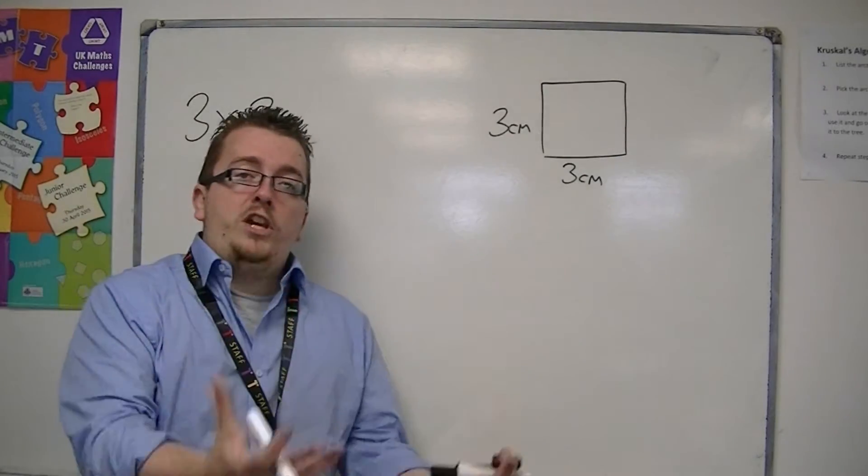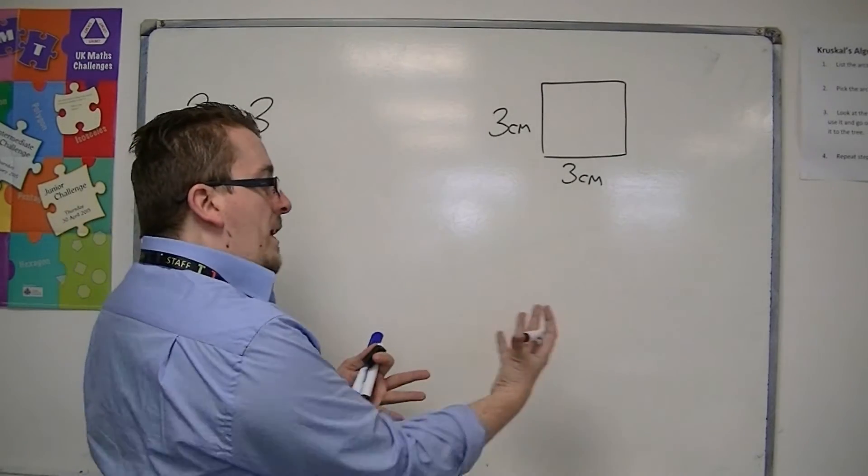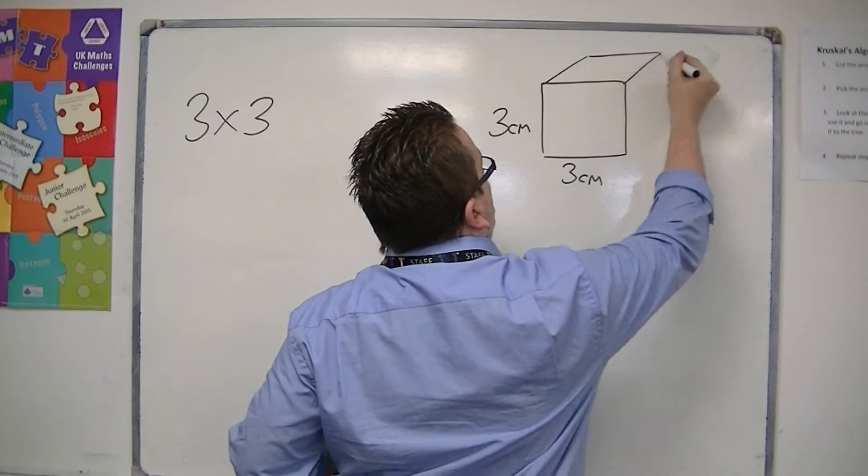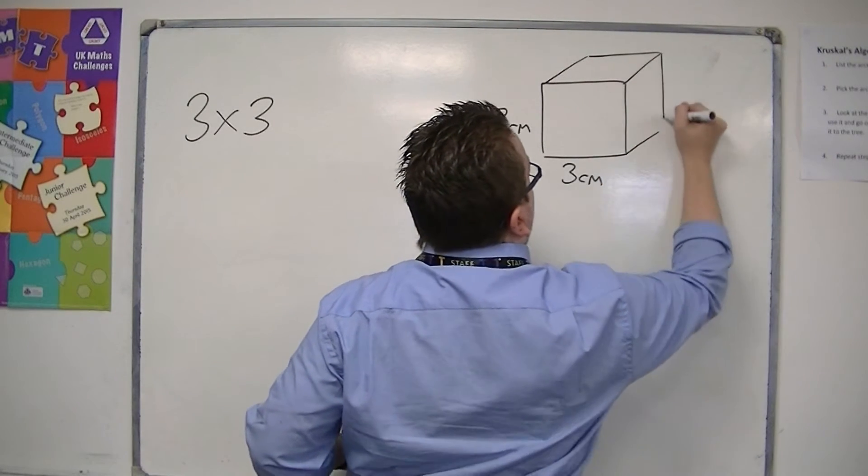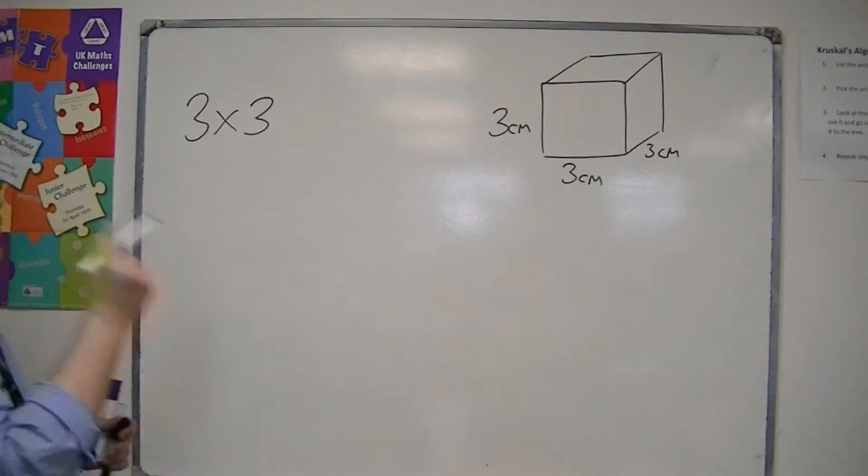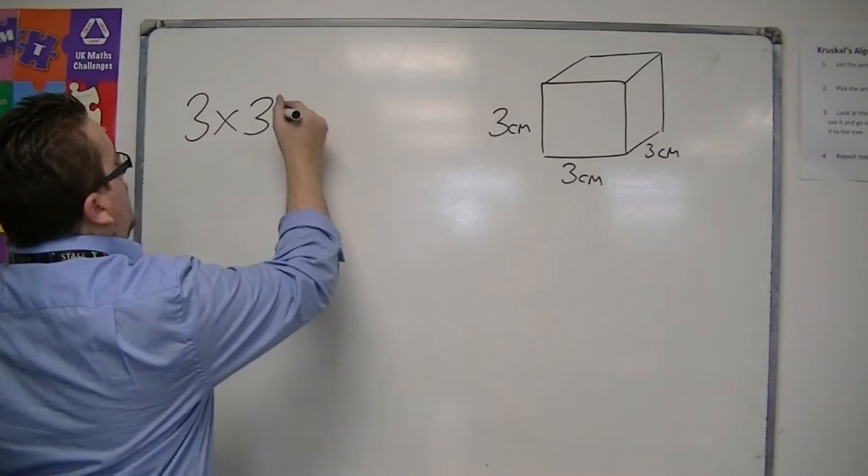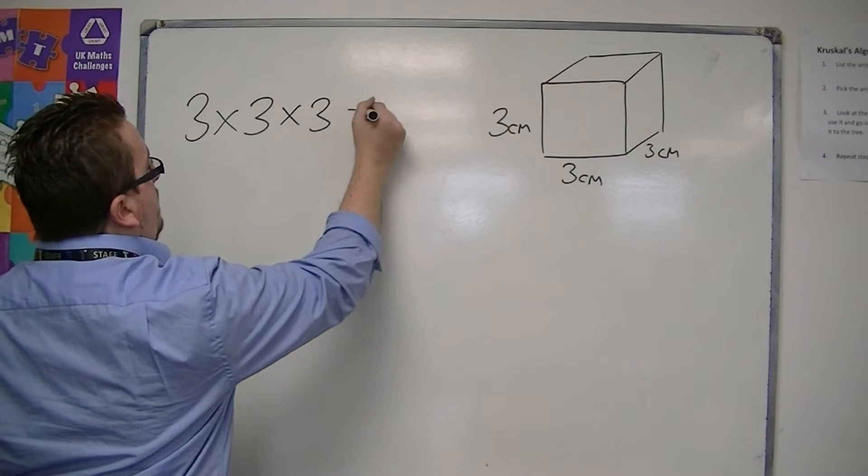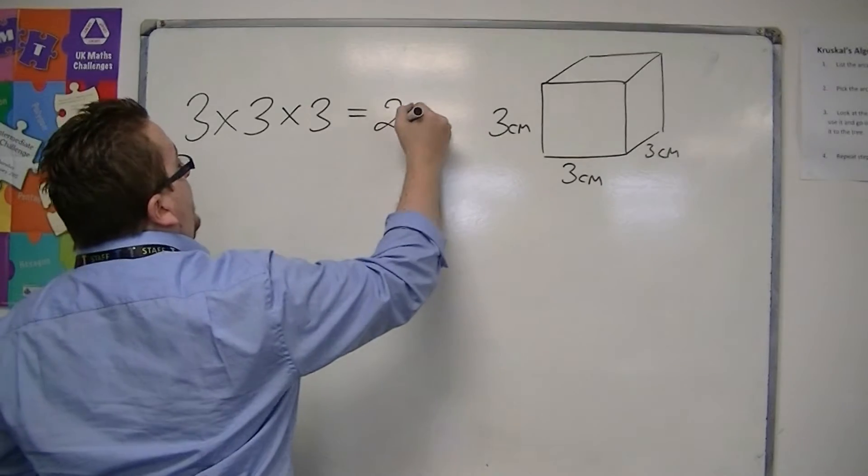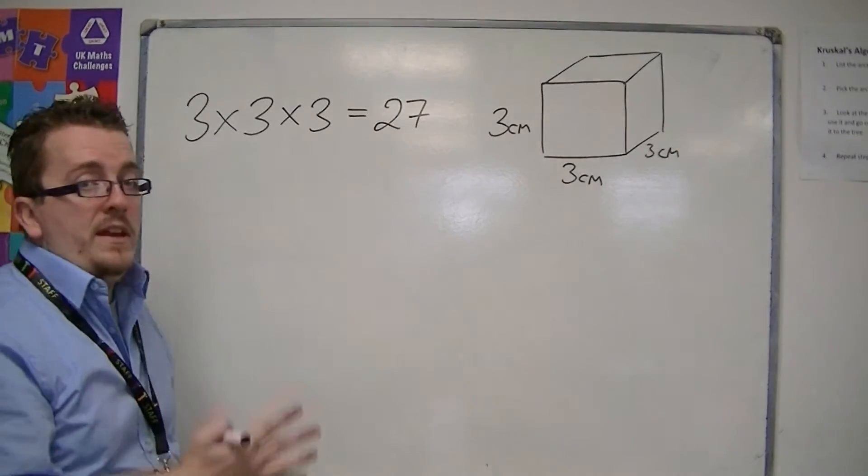With cube numbers, we take it one extra dimension, and you're now looking at the volume of a cube that is 3 centimetres deep. So 3 by 3 by 3. The cube number is 3 times 3 times 3, which is 27. So 27 is a cube number.